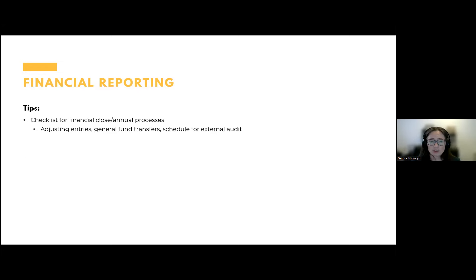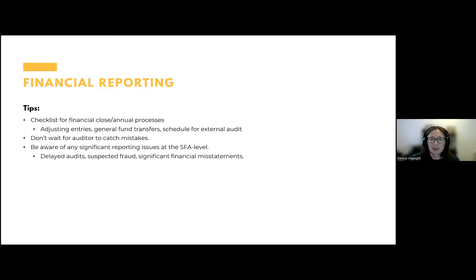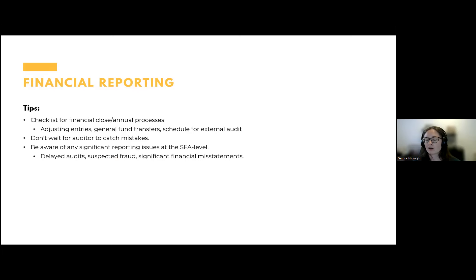Some additional tips: have a checklist for financial close, annual processes, any adjusting entries that need to be made, general fund transfers, and a schedule for your external audit so you know when that happens. Don't wait for the auditor to catch mistakes — look at your financial reports and see if you can find any mistakes before the auditor finds them. Be aware of any significant reporting issues at the SFA level. We look at your district audit reports — the last three — during the USDA administrative review. If there were any serious issues that came up, even if not related to food service — such as fraud or significant financial misstatements — we may consider that a risk flag for food service.